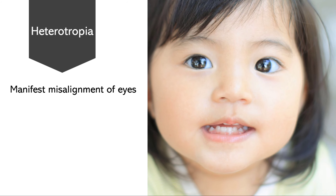Heterotropia is misalignment of the eyes that is manifesting — manifesting means something which is very obvious, so if someone has heterotropia it will be clearly visible to everyone. For example, in this picture you can see that the left eye is deviated, which is very evident as compared to the right eye.